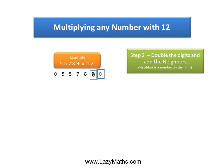So we start with 9 and 0 as our first pair. Double of 9 is 18 plus the neighbor 0 gives us 18. Notice the way we write 18 with 1 in the carryover position.